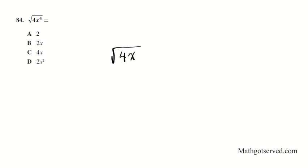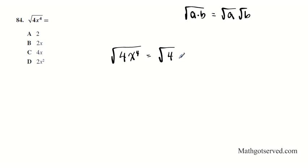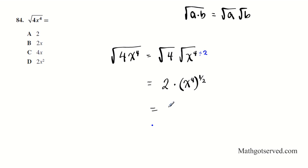Question 84: we want to find the square root of 4x to the fourth. I'll use the product property of radicals — the square root of a times b equals the square root of a times the square root of b. So we split this into the square root of 4 multiplied by the square root of x to the fourth. The square root of 4 is 2. For x to the fourth, taking the square root means dividing the power by 2 — equivalently, x to the fourth raised to the one-half — giving x squared. So our answer is 2x squared, option letter D.